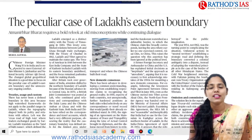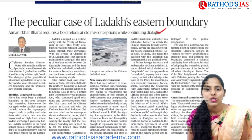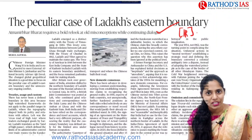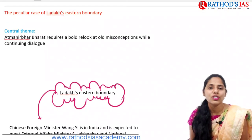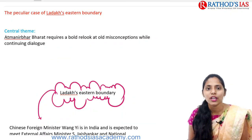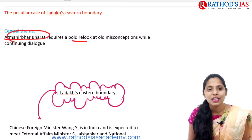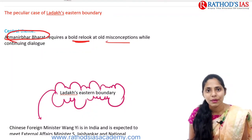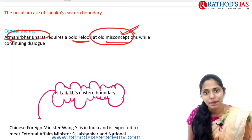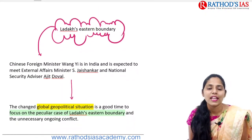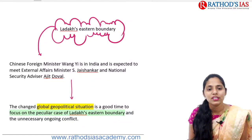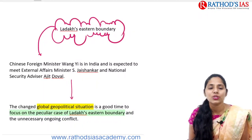The first article is titled 'A Peculiar Case of Ladakh's Eastern Boundary,' which is important from international relations under GS Paper 2. The central theme says that Atmanirbhar Bharat requires a bold relook at old misconsumptions while continuing dialogue. The article mainly talks about what these old misconceptions are regarding Ladakh. Currently, China's foreign minister is in India and is expected to meet our External Affairs Minister and the National Security Advisor.